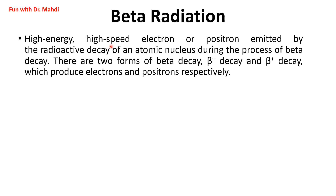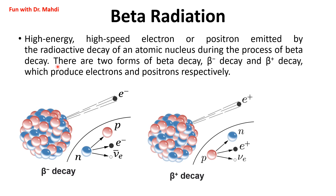The second type is beta radiation — high energy, high speed electrons or positrons emitted by the radioactive decay of an atomic nucleus during beta decay. There are two types: beta negative decay and beta positive decay. Beta negative decay happens for an unstable atomic nucleus with an excess of neutrons, where a neutron is converted to a proton, an electron, and an electron anti-neutrino.